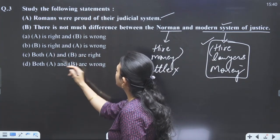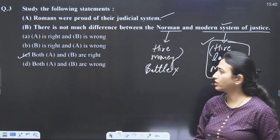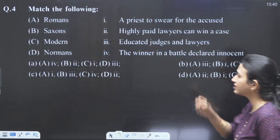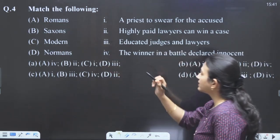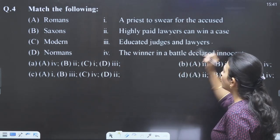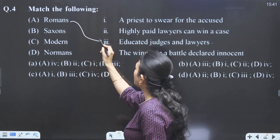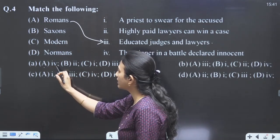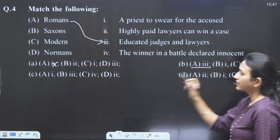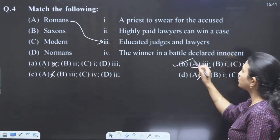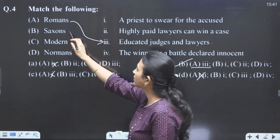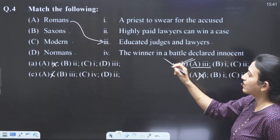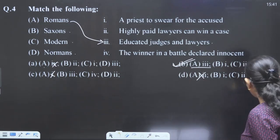A is right, B is wrong — let's see. Looking at the fourth option: Romans had law, they had educated judges and lawyers. Through the process of elimination, we have to find where Romans match with the third option. We cannot match these, but through elimination we can get to the correct answer. We just have to match first. This is our answer.